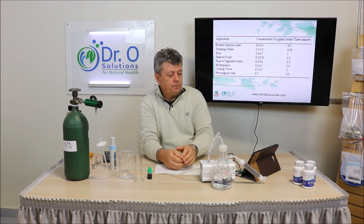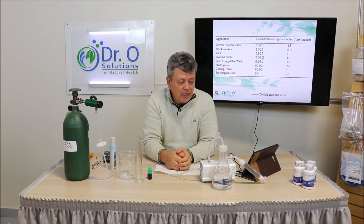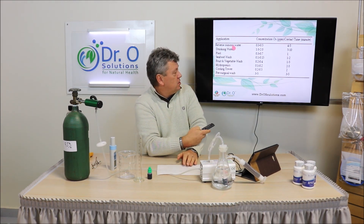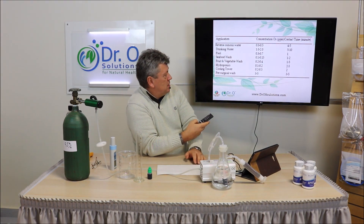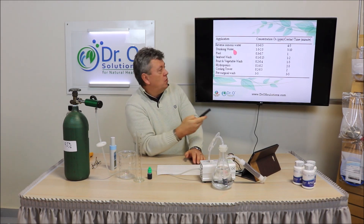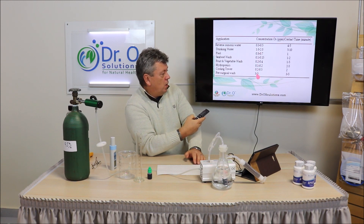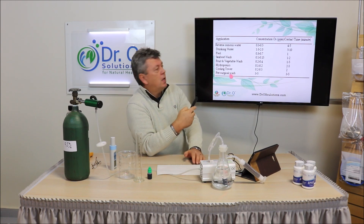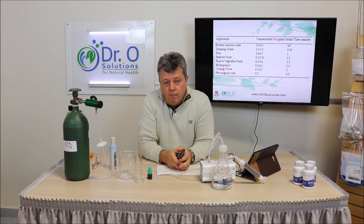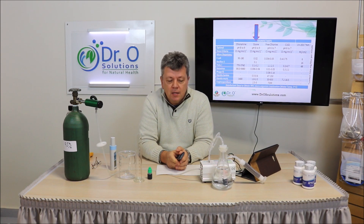Let me show you a chart. This chart represents the recommended ozone concentration in water measured in ppm, and contact time in minutes. For drinking water, as I mentioned in my video on ozonated water, it must be between one to two ppm. For pre-surgical wash applications, which includes root canals for dentists — and many dentists now use ozonated water — it is three to five ppm. Note that one ppm equals one gamma, which equals one milligram per liter of ozone concentration.